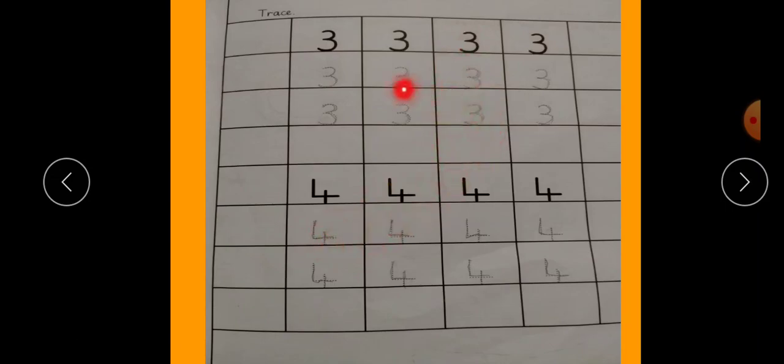The numbers should stay inside the box. Any number should not go below the line. Trace number 3 and number 4 carefully within the box.